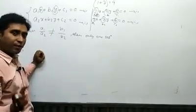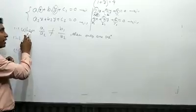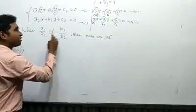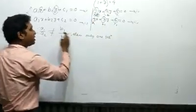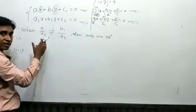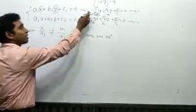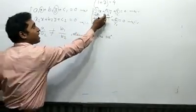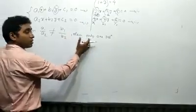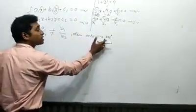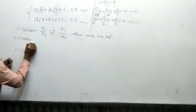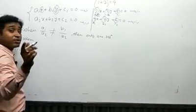So when a₁/a₂ is not equal to b₁/b₂, then there is only one solution. For example, 2/3 is not equal to 3/7 — the x-coefficient ratio is not equal to the y-coefficient ratio — so these two equations have only one solution.